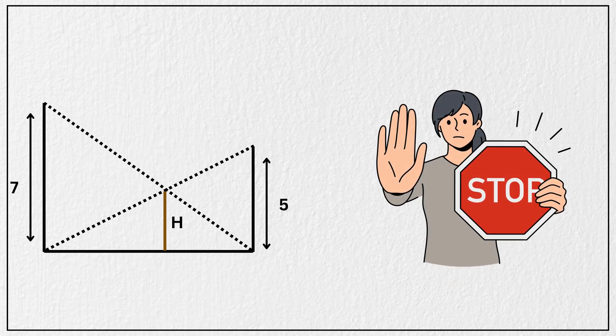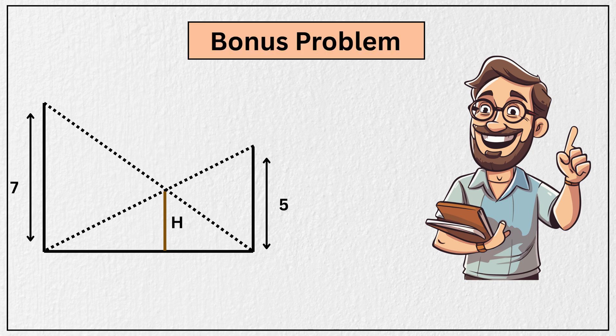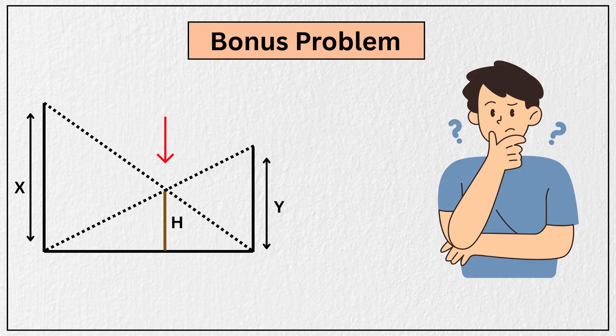But wait, before you go, I have one more challenge. Can you find the height of intersection if the poles are x meters and y meters tall instead of 7 and 5? Think it through and drop your answer in the comments below.